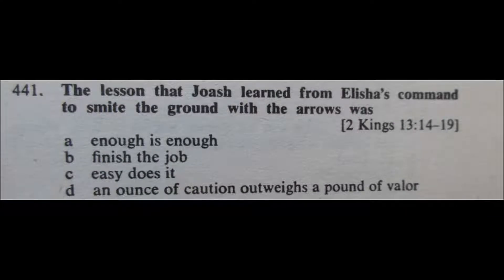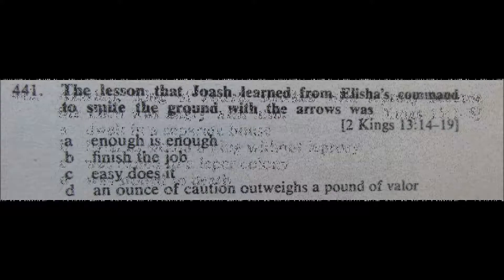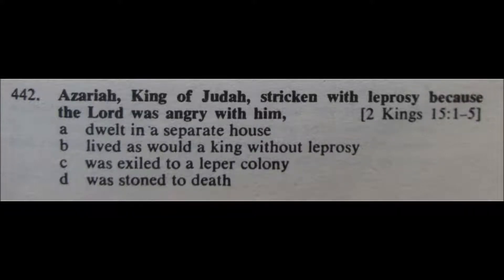Question 441: The lesson that Joash learned from Elisha's command to smite the ground with the arrows was: A. Enough is enough, B. Finish the job, C. Easy does it, or D. An ounce of caution outweighs a pound of valor. I'm going to just have to pick one of these because I don't know what the correct answer is at all. I am going to go with B, Finish the job, for question 441.